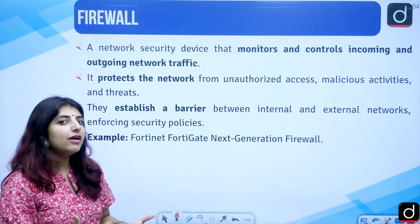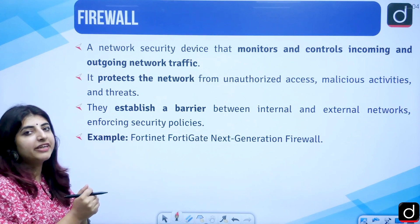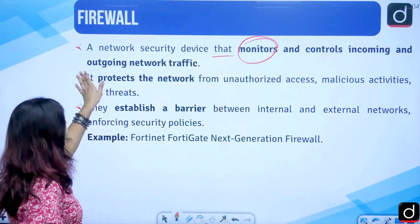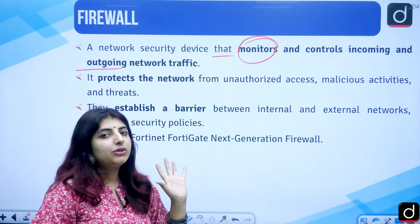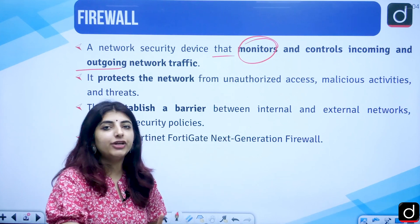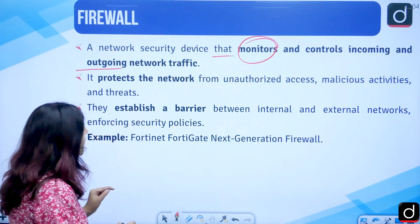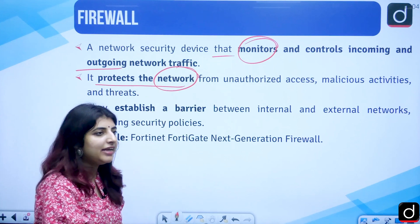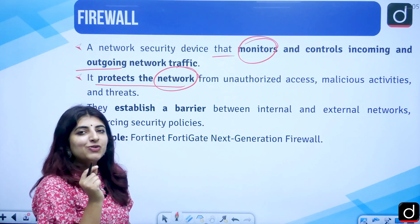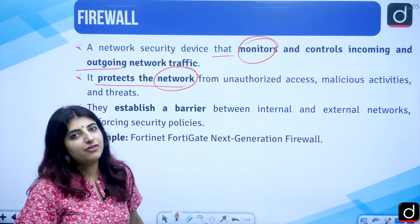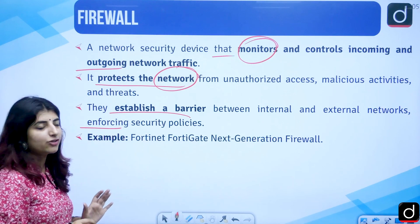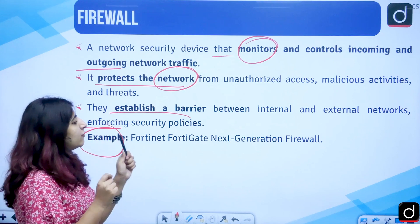Then we have the firewall. A firewall is a device that monitors and controls incoming and outgoing network traffic. It maintains the security of your device by protecting the network from unauthorized access and malicious threats like Trojan horses or backdoors. The firewall acts as a shield and barrier to protect your computer from such threats. It establishes a barrier between internal and external networks, enforcing security policies. An example is the Fortinet FortiGate next-generation firewall.